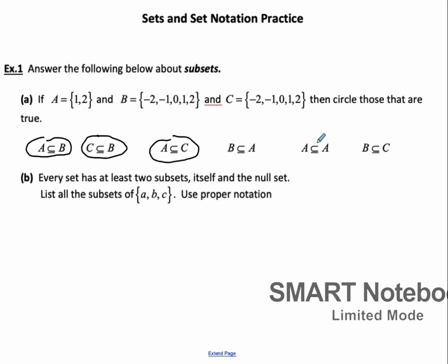A is a subset of A, because everything in A is also in A — that's kind of obvious. And B and C are actually equal, so they are actually subsets of each other.